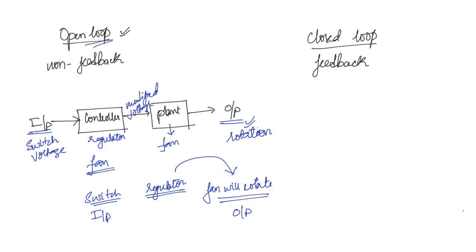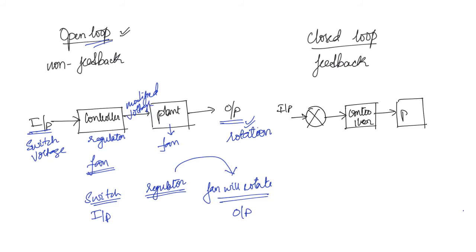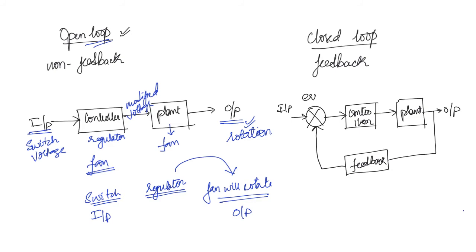Now we will see what a closed loop system is. In a closed loop system you will have an input and an error detector. Next you have the controller, from which you have the plant, and then you have the output. From the output you will have a feedback signal, which is fed back to the error detector. At the error detector you have one input and one feedback signal — this is why it is called a closed loop system.